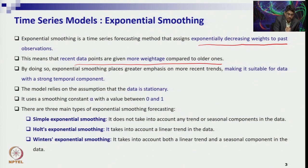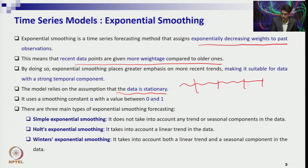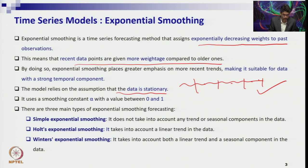Another assumption is that the data should be stationary. If you have stationary data where the mean does not change over a period of time and the standard deviation remains steady, it is better to use the exponential smoothing model — it works very well with better accuracy. The alpha range lies between 0 to 1. When it comes to the exponential smoothing model, there are three different models.